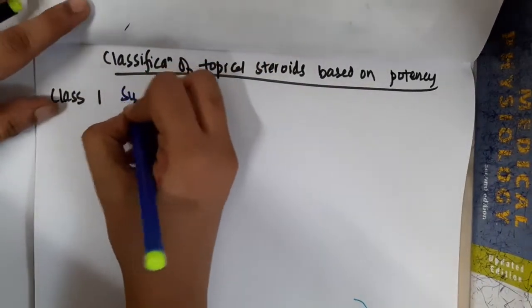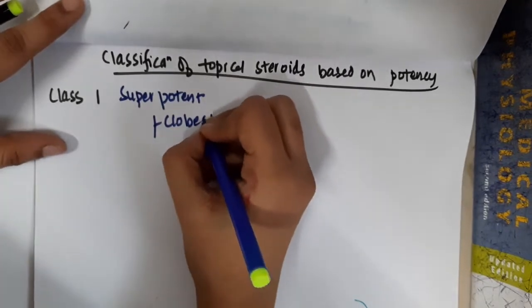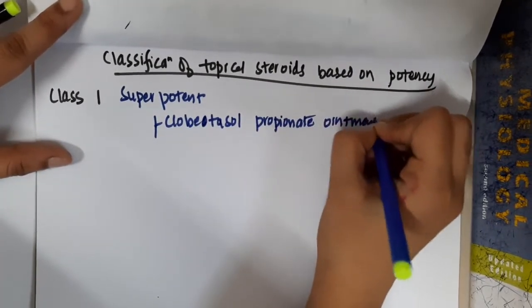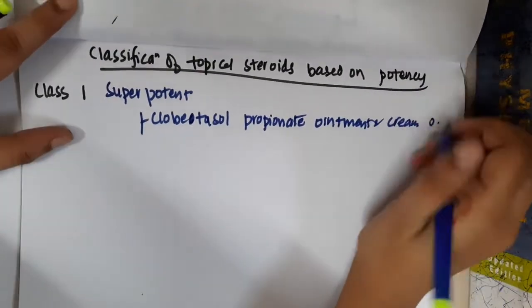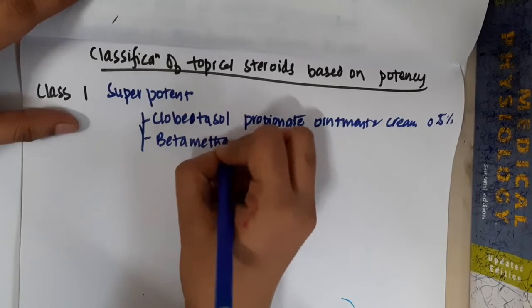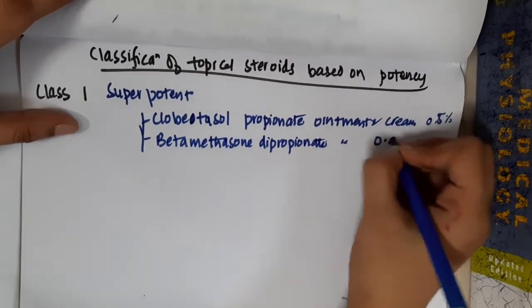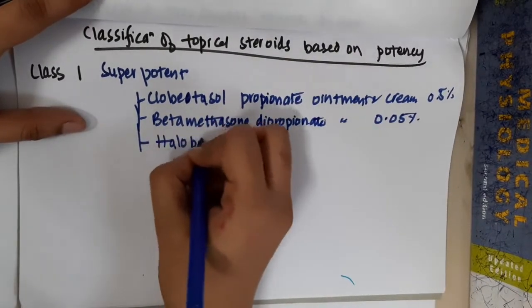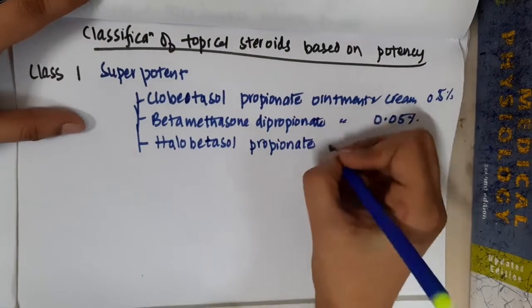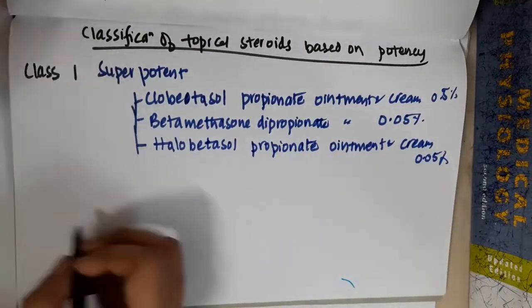Class 1 is super potent. This includes clobetasol propionate ointment and cream at 0.05%, betamethasone dipropionate ointment at 0.05%, and halobetasol propionate ointment and cream at around 0.05%.